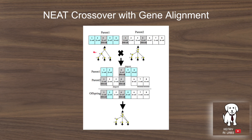When parent one and parent two are selected for crossover, they are first lined up based on the historical traits they share. Both share innovation numbers one and two, but not three, and share four and six but not others. For genes not shared, the historical markings are kept from the parent that performed better. In this case, parent two has better fitness, so genes three, seven, and eight are kept while gene five is discarded.